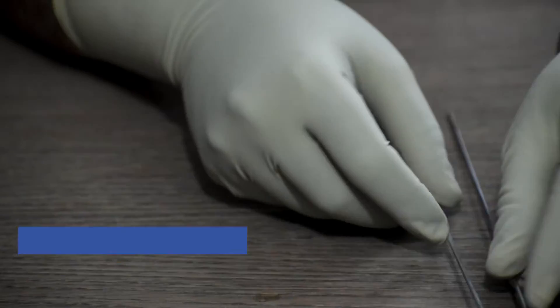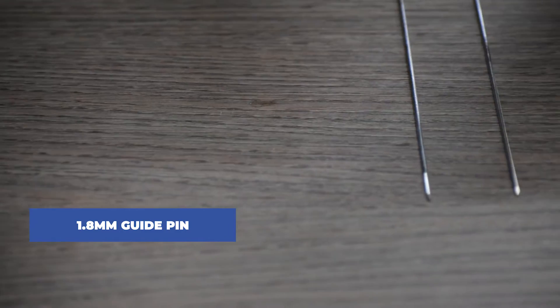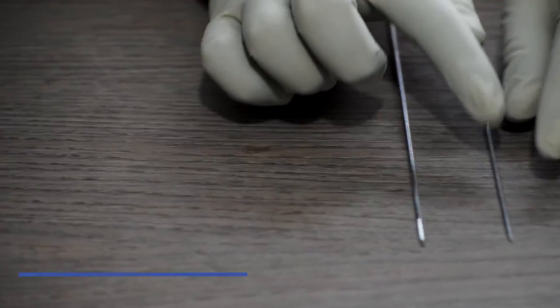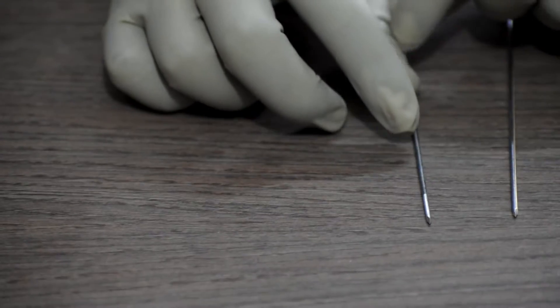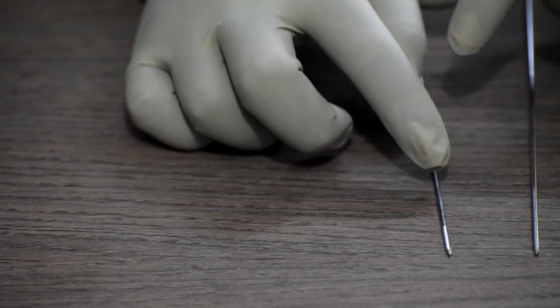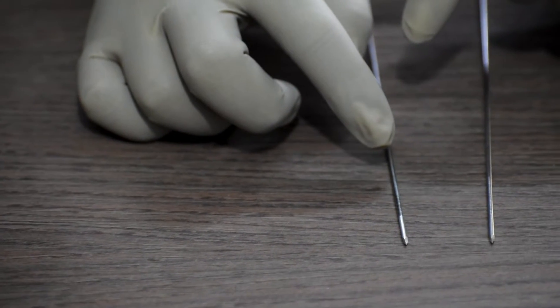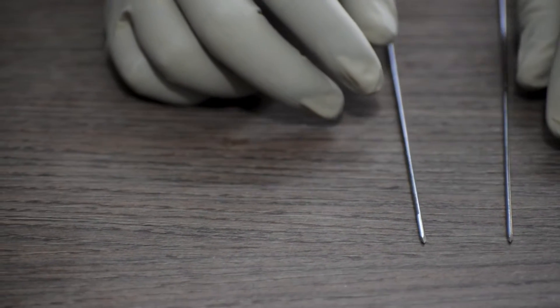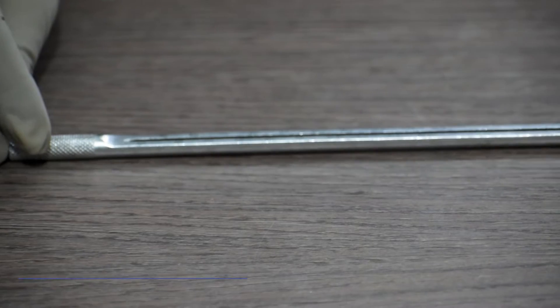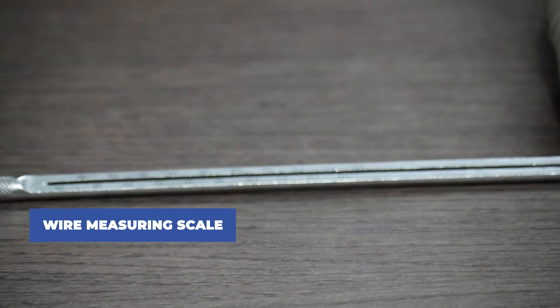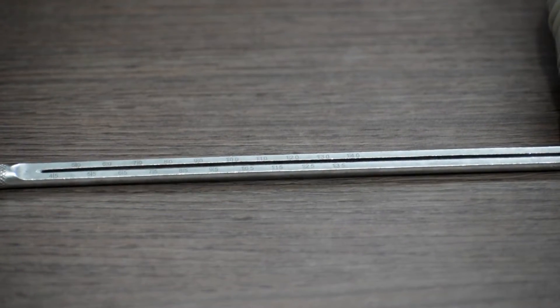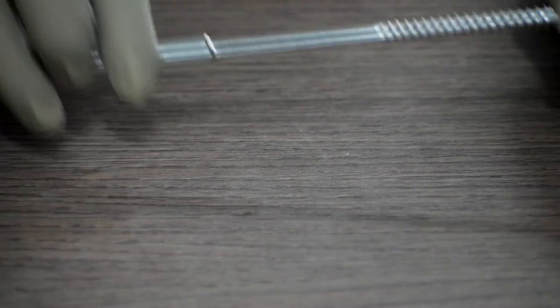Coming to the instruments, we will require guide pin or guide wire, plain and threaded. This one is plain and this one is threaded, 1.8mm. It will be used as per surgeon's preference, so we have to provide both. Next, we will require a wire measuring scale to measure the length of the guide pin or guide wire. There are markings on the flat surface to record the length.